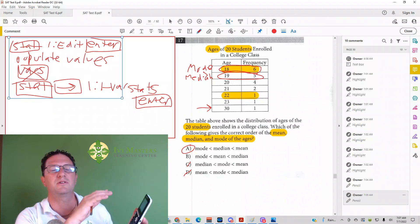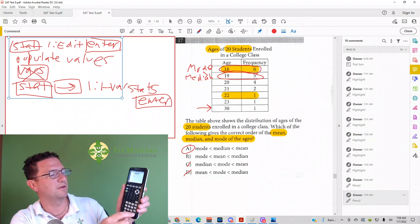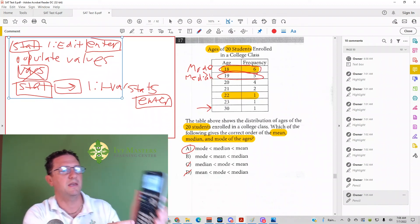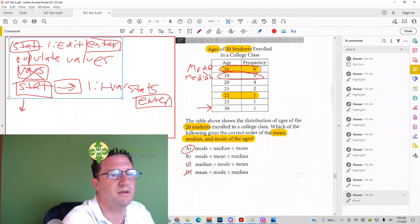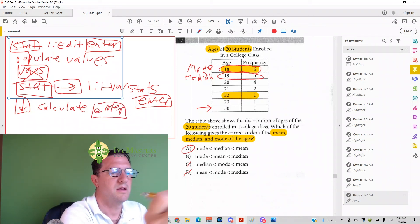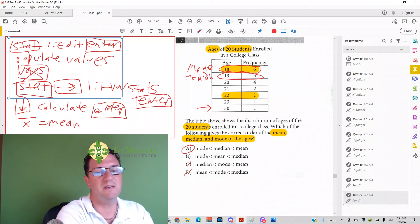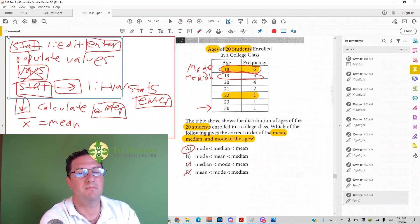I'm not going to write that down, because you only have to do that once, and then it'll be there forever. And what I do is I go down to calculate, and then I hit enter. And then what you see is, you're going to see a line with an X above it. That is the mean. And you can see that the mean is 20. So it is as predicted. It's bigger than the median and the mode.